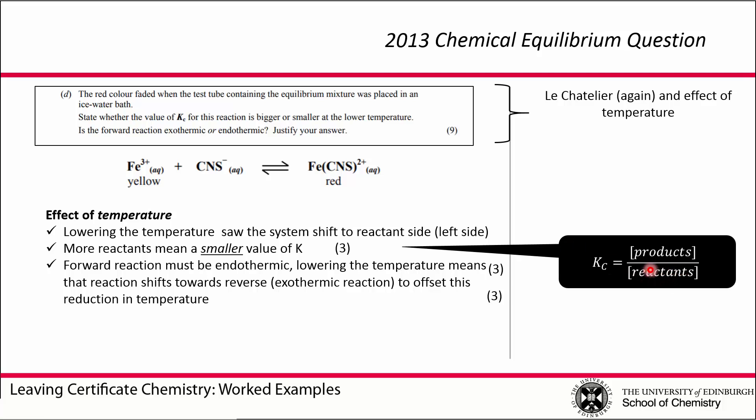If we are forming more reactants, then obviously our equilibrium constant is going to be smaller. There's going to be a bigger number downstairs in this expression, so Kc will be smaller. Then it's asking, is the forward reaction exothermic or endothermic? When we decrease the temperature, we favored the reverse reaction. So the system tried to respond by increasing the temperature again. If we decrease the temperature and the system moved towards the reverse side, the reactants, that means the reverse reaction is exothermic. So that means the forward reaction is endothermic.